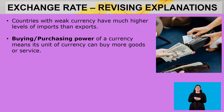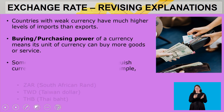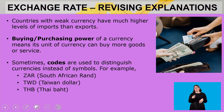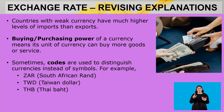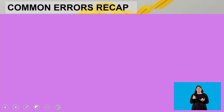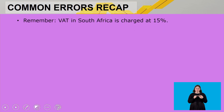We also looked at the buying power, sometimes referred to as the purchasing power, of a currency — meaning its unit of currency can buy more goods and services. We also use currency codes to distinguish between currencies instead of symbols. For example, ZAR represents the South African rand, TWD represents the Taiwan dollar, and THB represents the Thai baht.